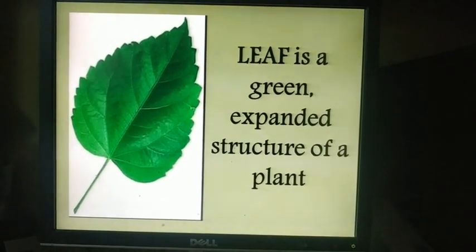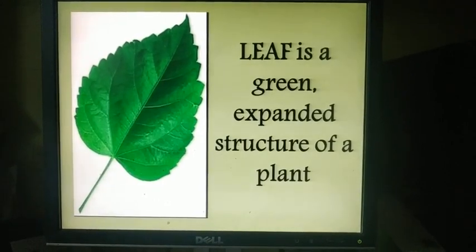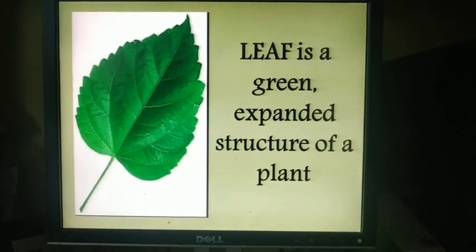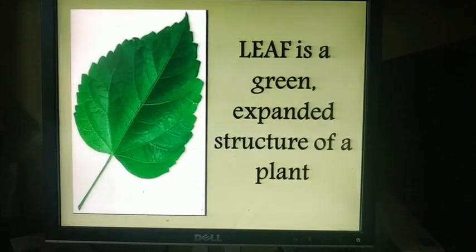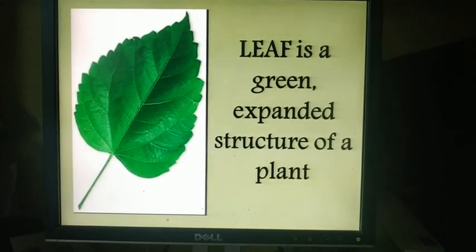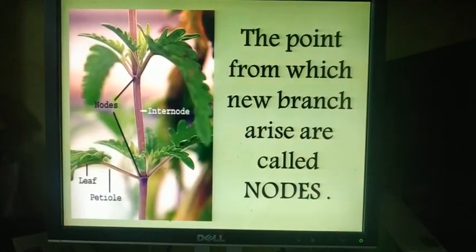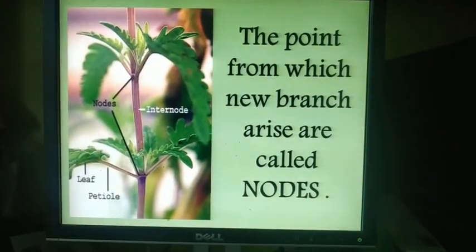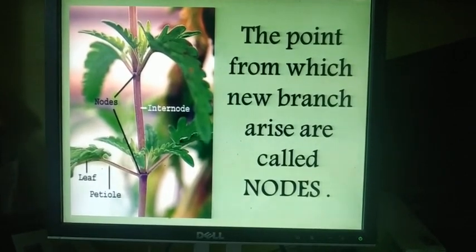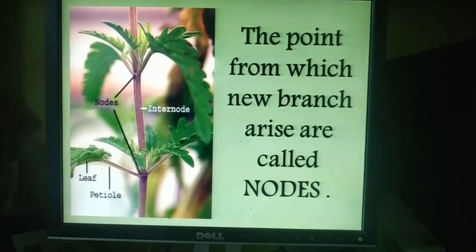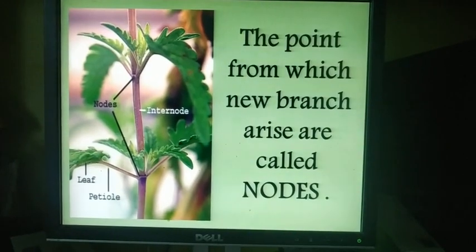The next important topic is leaf. We are going to see leaf structure and functions. A leaf is a green expanded part of the plant born on stem nodes. Let us see what the nodes of a stem are. From the stem you will have points from which new branches arise, and these points are known as nodes.